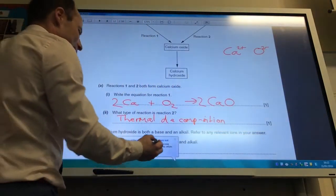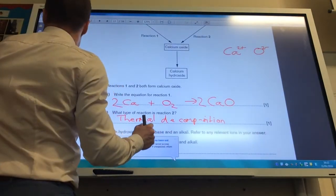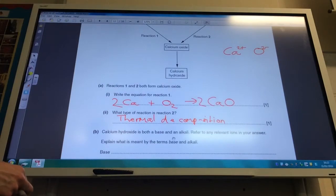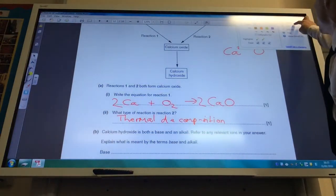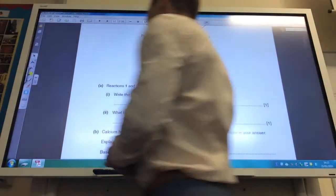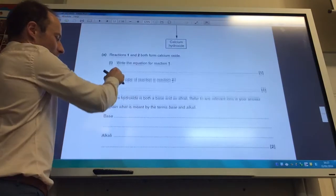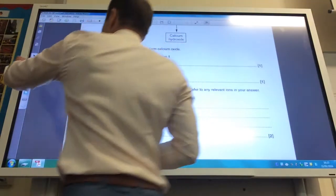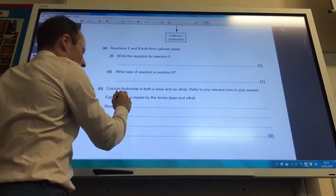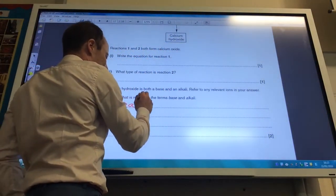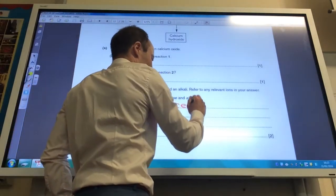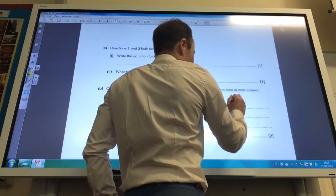Calcium hydroxide is both a base and an alkaline. So refer to any relevant ions in your answer. What is meant by the terms base and by the term alkaline? So let's go up. Well, what is meant by a term base? Well, a base we know readily accepts H plus ions. So a base readily accepts H plus ions.